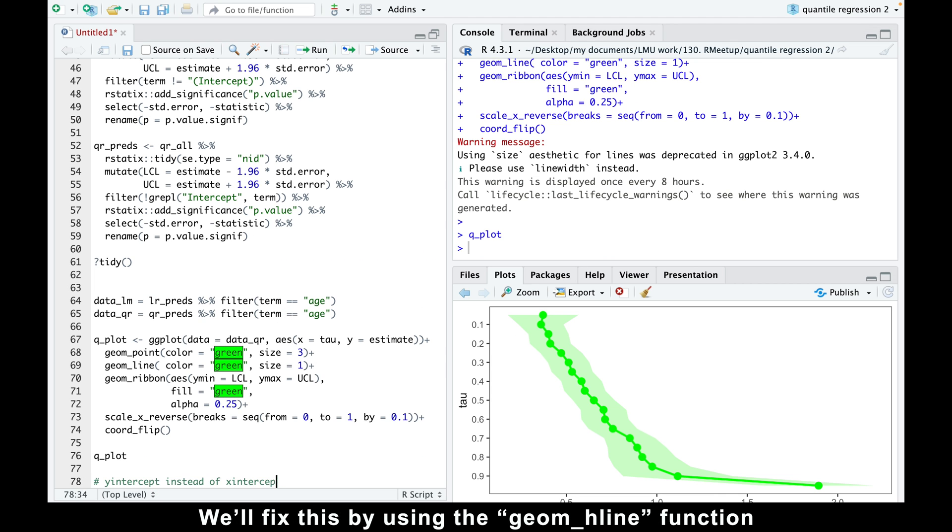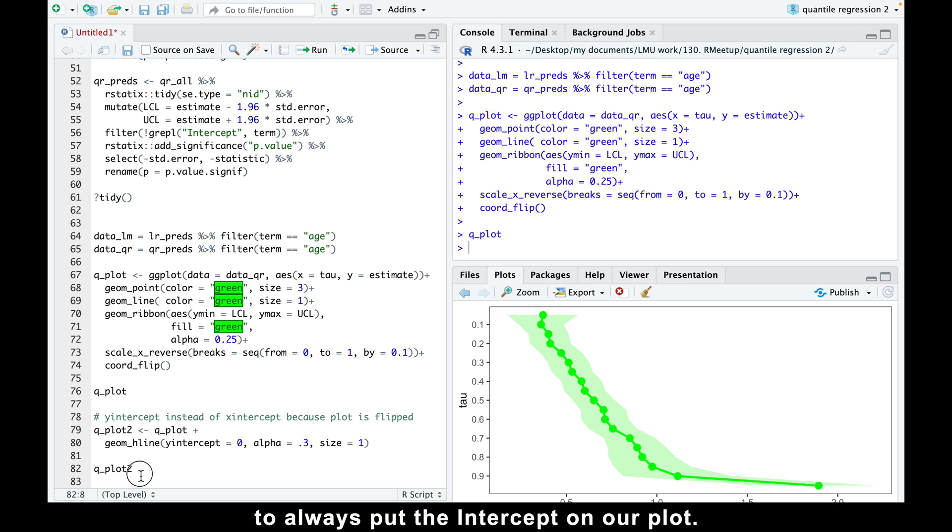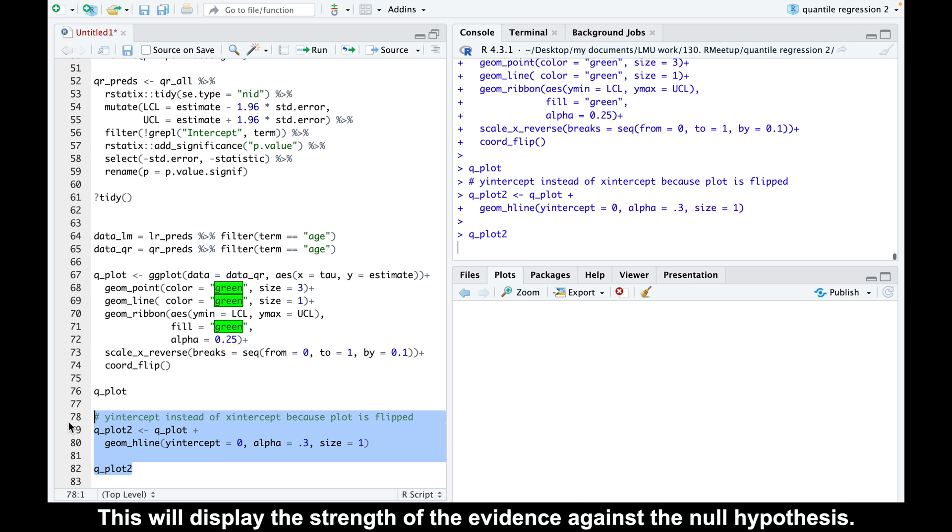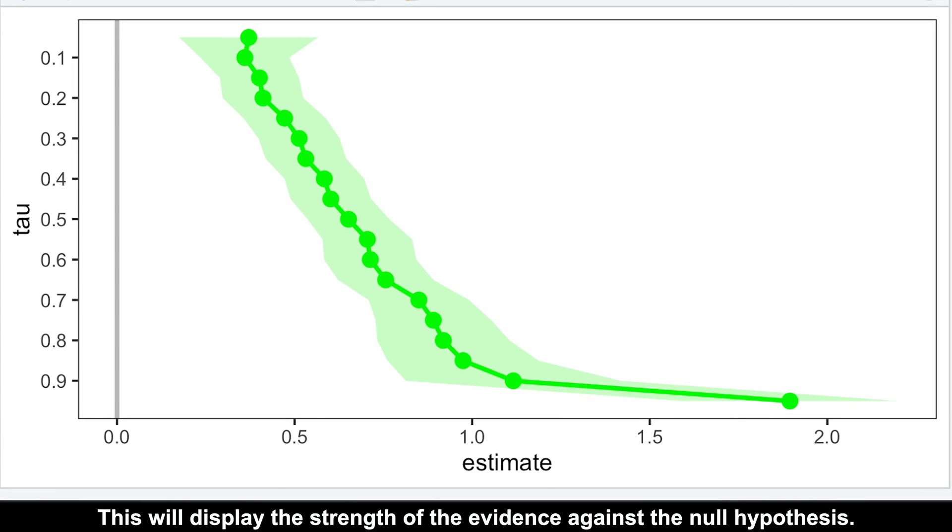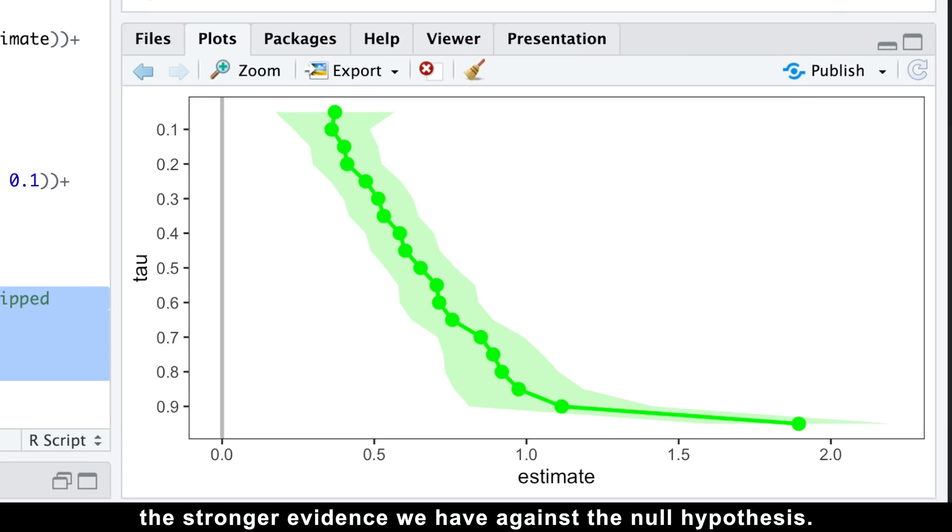We'll fix this by using the geom_hline function to always put the intercept on our plot. This will display the strength of the evidence against the null hypothesis. The further our estimates are from the intercept, the stronger evidence we have against the null hypothesis.